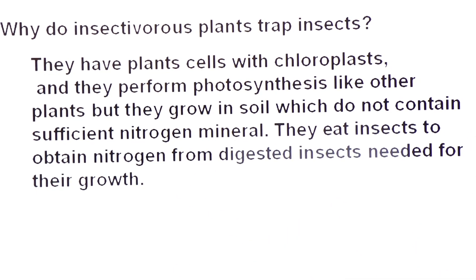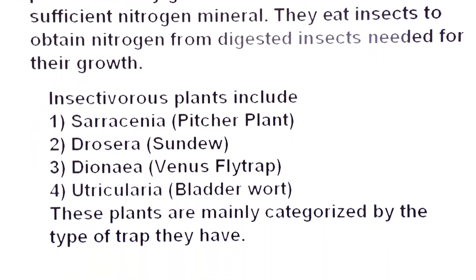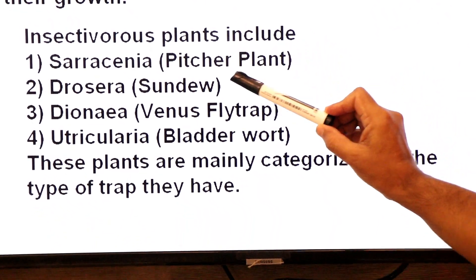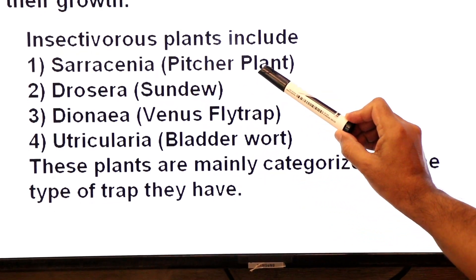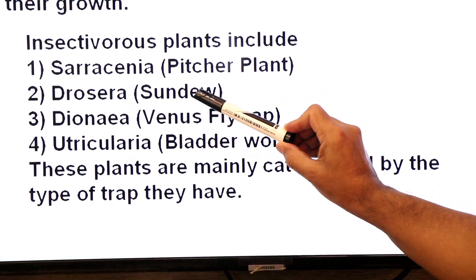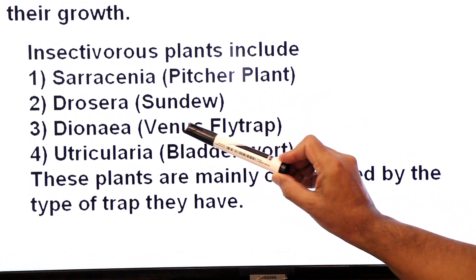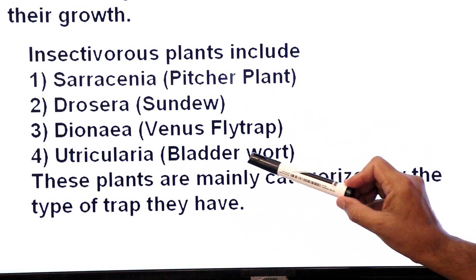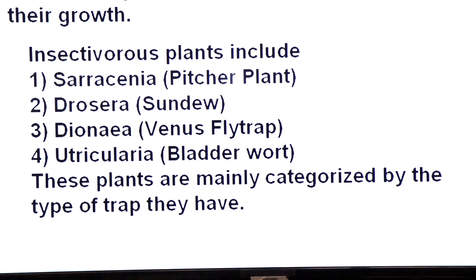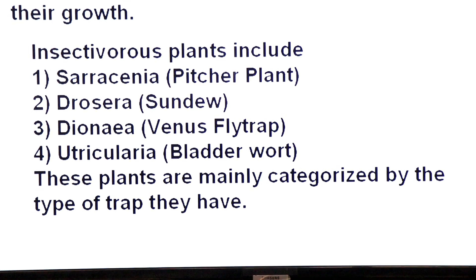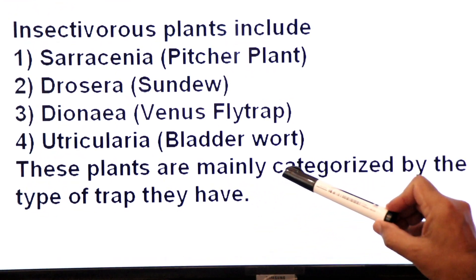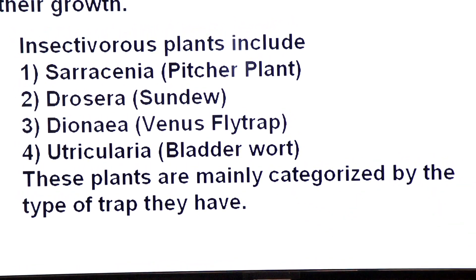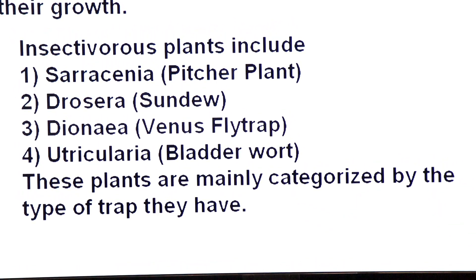A few examples of insectivorous plants: Sarracenia (pitcher plant), Drosera (sundew plant), Dionaea (Venus fly trap), and Utricularia (bladderwort plant). These plants are mainly categorized by the type of trap — by the mechanism they use to trap their prey.